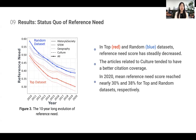Considering the evolution of the Reference Need score, we can see that in both top and random datasets, the Reference Need score has steadily decreased over 10 years. We can also observe that articles related to culture tended to have better citation coverage, meaning a lower Reference Need score. In 2020, the mean Reference Need score reached nearly 30% and 38% for the top and random datasets respectively.